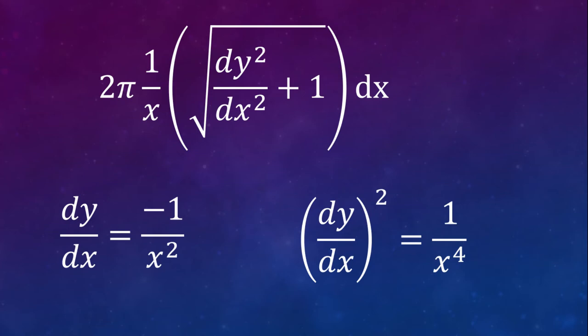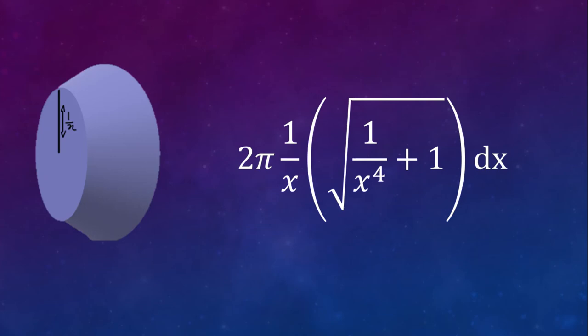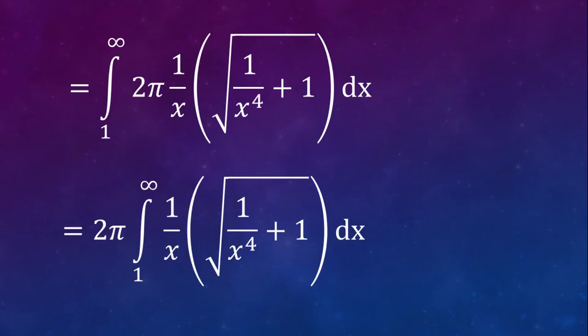And we know what dy by dx is. It's simply the derivative of this function, which turns out to be minus 1 over x squared. And that all squared is 1 over x to the 4th. And we can replace 1 over x to the 4th with that. And now we are ready to integrate this function.